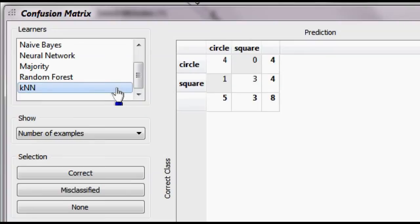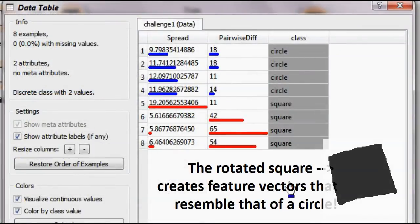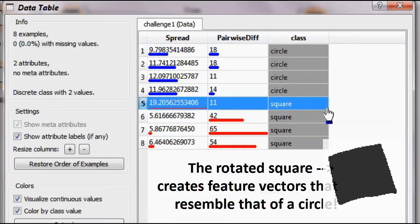In fact, if we were to look at its feature vectors, you'll realize that they look a lot like that of a circle. Obviously, the algorithm's going to get confused.